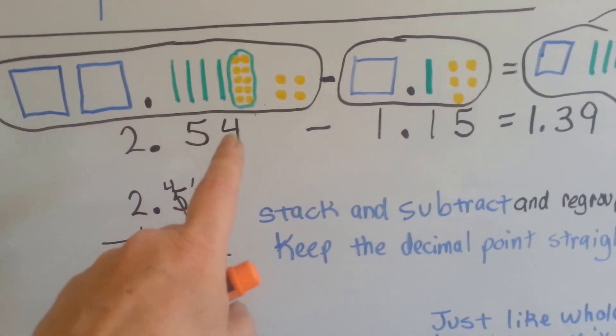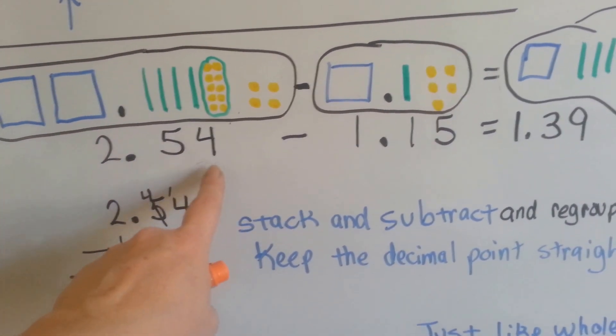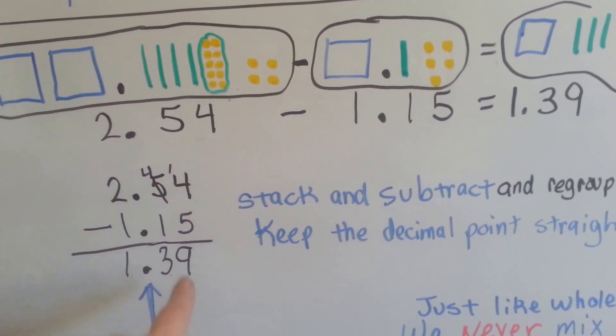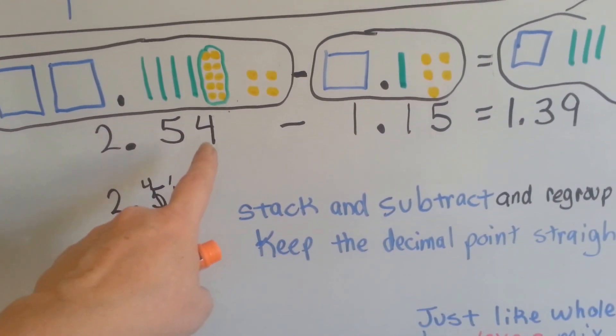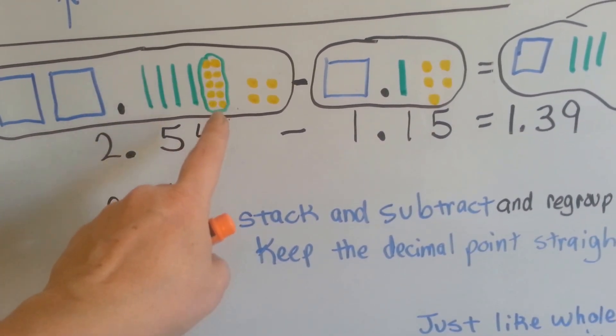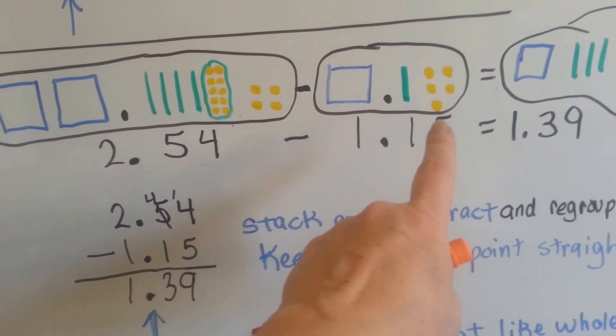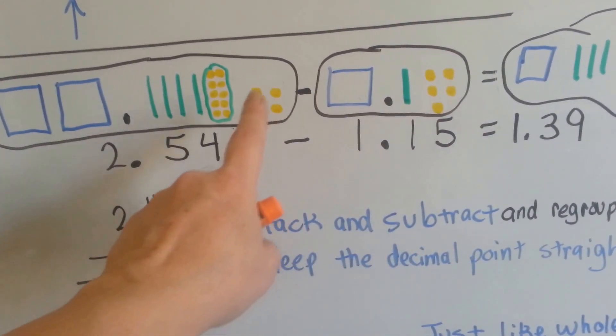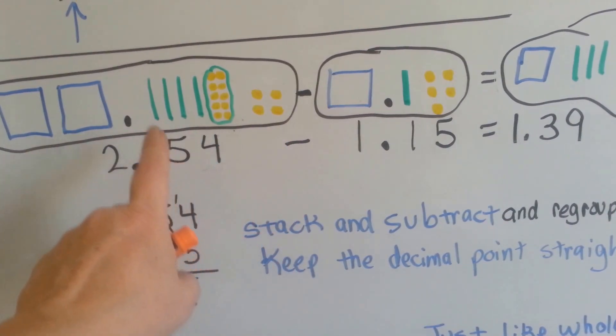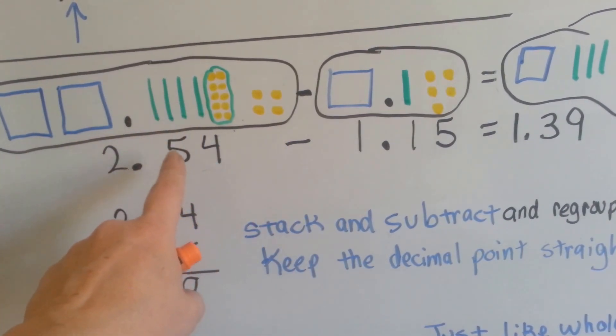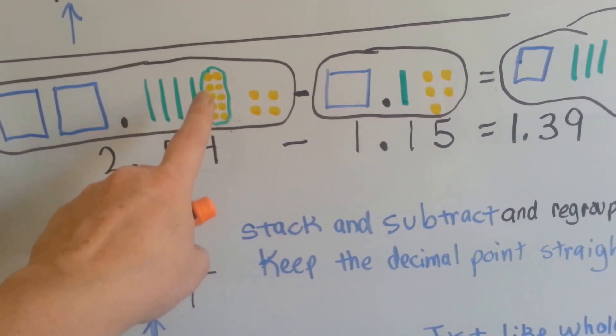If we've got two and fifty-four hundredths, we'll see how the four is in the hundredths place and we need to borrow to regroup. So if we turn one of these into a ten right away, into ten single yellow ones, when we have to take the five away, there's only four here, because there's four hundredths.